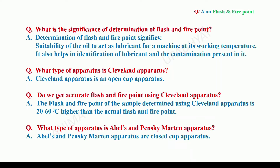What type of apparatus is the Cleveland apparatus? The Cleveland apparatus is an open cup apparatus. Do we get accurate Flash Point using the Cleveland apparatus? No — the Flash Point determined using Cleveland apparatus is 20 to 60 degrees centigrade higher than the actual Flash Point, meaning we do not get accurate results using this apparatus.